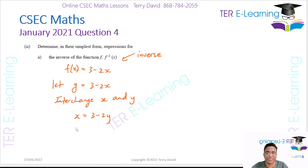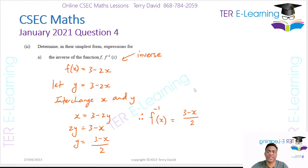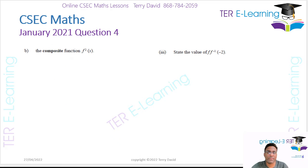My next step is to make y the subject. So if I carry the minus 2y to the left, it becomes 2y is equal to 3 minus x. And therefore y is equal to (3 minus x) over 2. So the inverse is equal to (3 minus x) over 2. That's my inverse function.